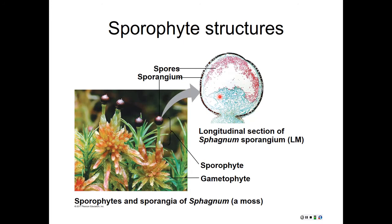In the sporophyte we have a structure called the sporangium, which translates to 'spore house' — 'spore' plus 'angium,' meaning vessel or house. The sporangium is a diploid structure that undergoes meiosis to produce numerous haploid spores. So the sporangium houses the cells that will undergo meiosis to produce haploid spores.